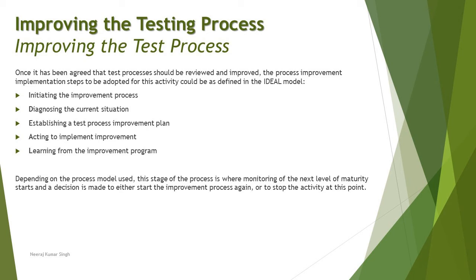Acting to implement the improvement means the test process improvement plan is implemented. This could include any training or mentoring required to tell your people how the improvements will be done — particularly for those who lack effectiveness in certain activities — as well as piloting of processes and ultimately their full deployment.